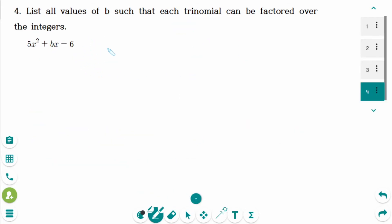This is the last question. List all values of b such that each trinomial can be factored over the integers: 5x squared plus bx minus 6. This time, I will be using decomposition.